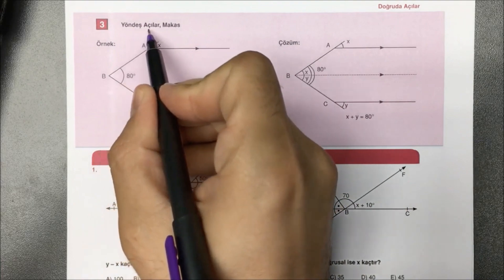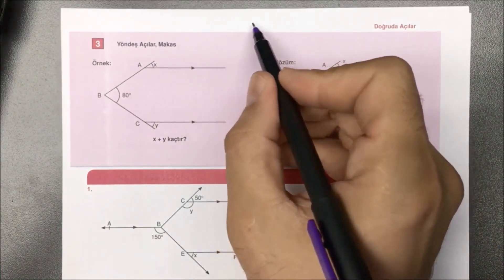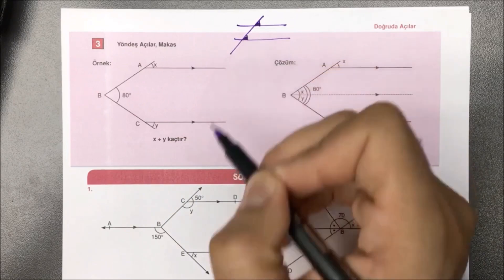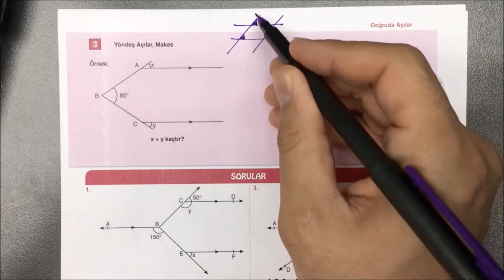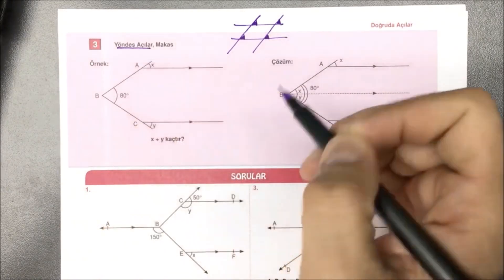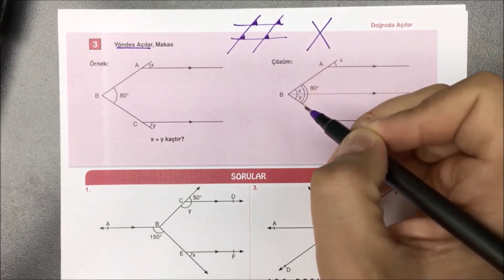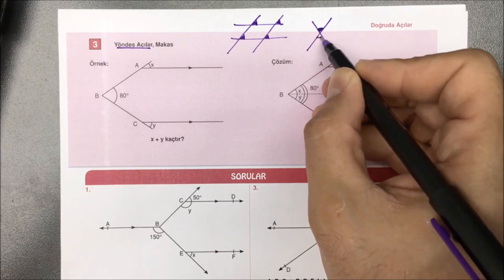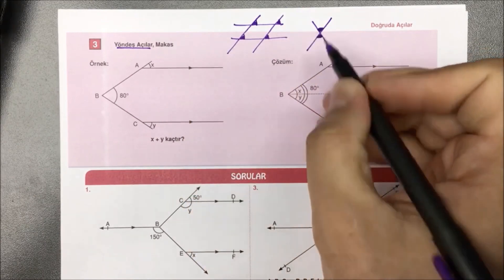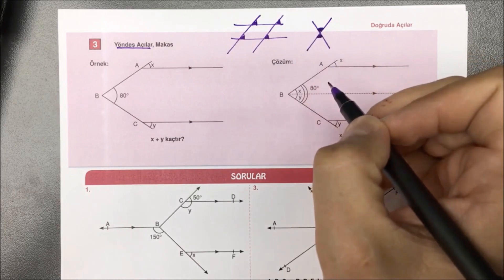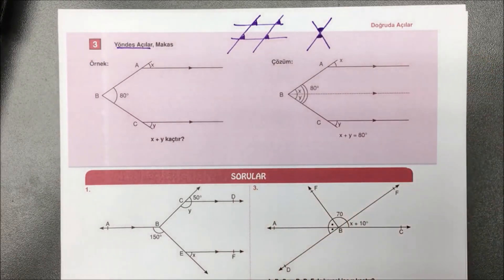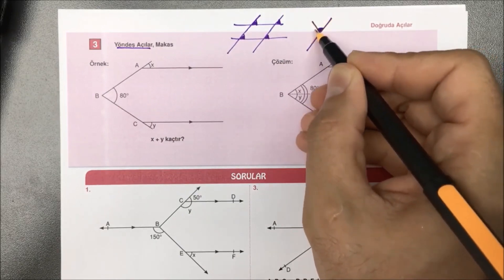Üçüncü türümüzde yöndeş açılar ve makas var. Paralel doğrular varken bunları kesen bir doğru verildiği zaman aynı yöne bakan iki açı birbirine eşittir; buna yöndeş açılar denir. Geometri kitaplarında iç ters açılar olarak gördüğümüz çarpı işaretine ben makas diyorum. Makası gördüğümüzde karşılıklı olarak iki açının birbirine eşit olma kuralına makas diyeceğim arkadaşlar. Dolayısıyla birlikte çalışıyorsak bu kavramlara alışalım.